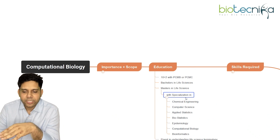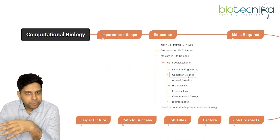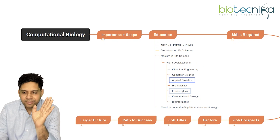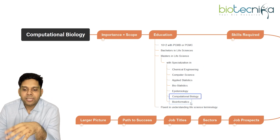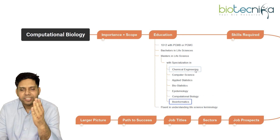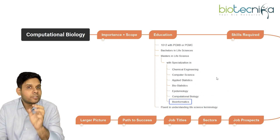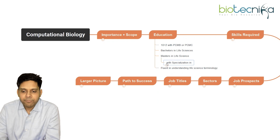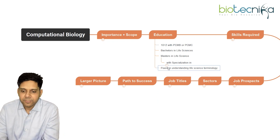You can take a specialization in chemical engineering, computer science, applied statistics, biostatistics, epidemiology, computational biology, or bioinformatics — any of these as per your interest. That will further help you excel in this field.